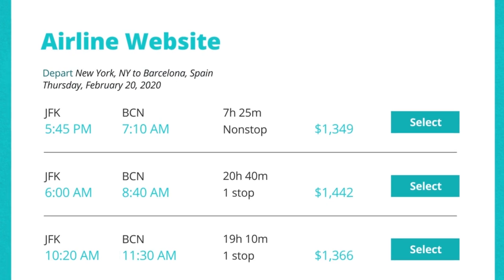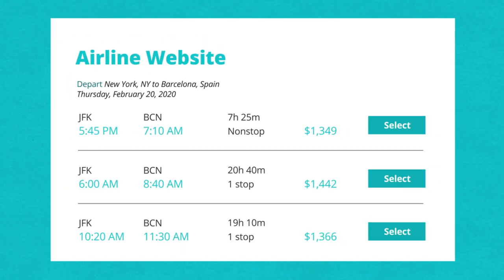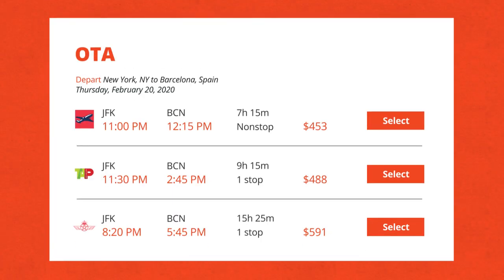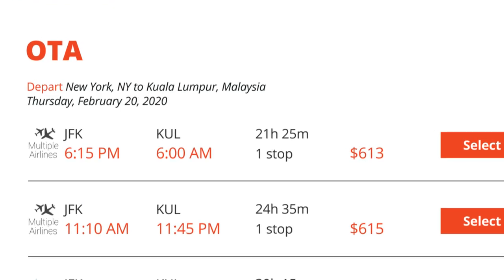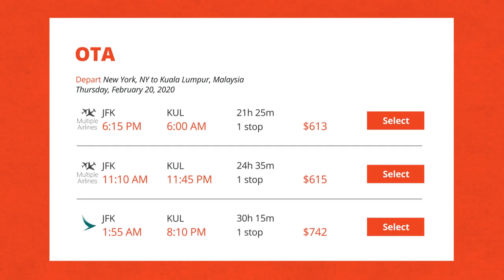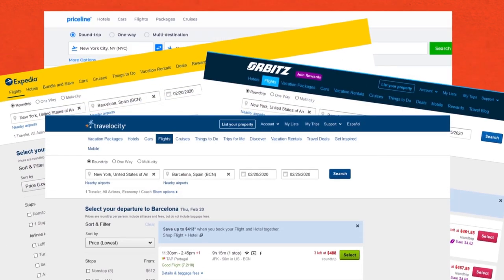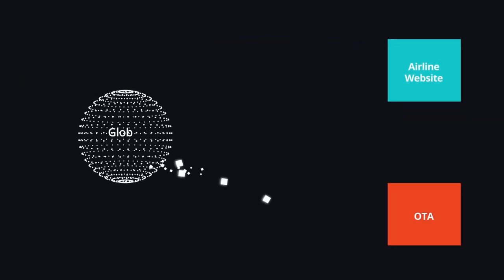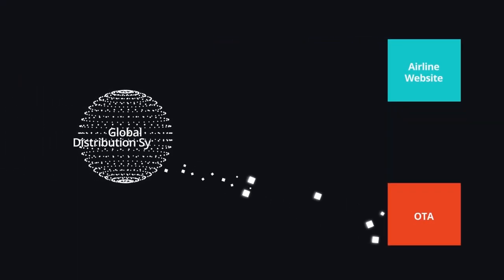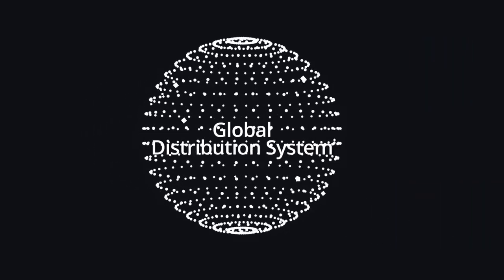But what if passengers want to compare prices or have a complex itinerary that involves more than one carrier? Then they will obviously prefer to search flights via OTAs such as Expedia, Orbitz, Travelocity, or Priceline. Similar to traditional agencies, OTAs mainly get the flight information from Global Distribution Systems, or GDSs.